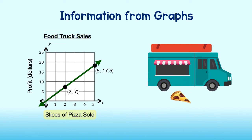When the truck sells two slices of pizza, it gains a profit of seven dollars, and when it sells five slices of pizza, it gains a profit of seventeen dollars and fifty cents. We can do some simple arithmetic to see that they are selling slices for three dollars and fifty cents each.